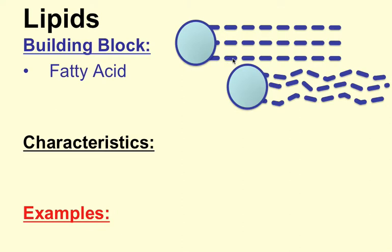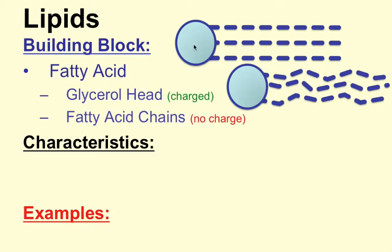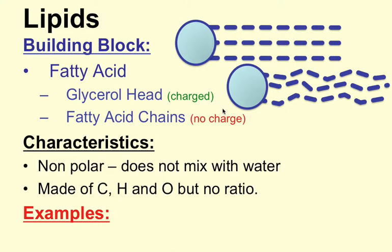The circles represent glycerol heads, which have a charge, and then we have three fatty acid chains on each of these. You'll notice there's a difference — one of them has straight chains, one of them has kinked chains. We'll talk about how those are different a little later on. Lipids are nonpolar — they have one end that has a charge and another end that does not. You need two poles, a positive and a negative, in order to be polar. So this means that lipids do not mix with water, which is an important characteristic because it makes them easy to identify.